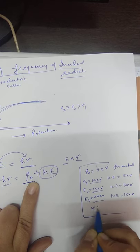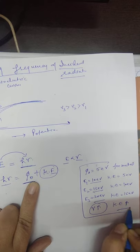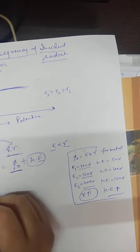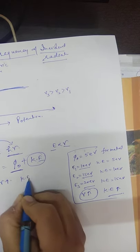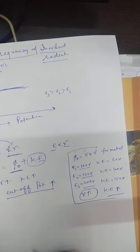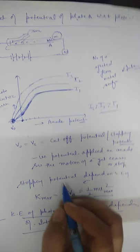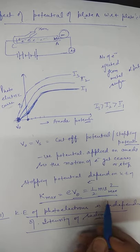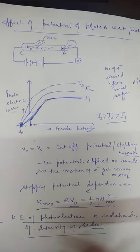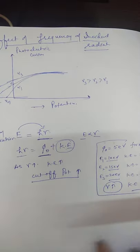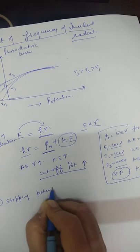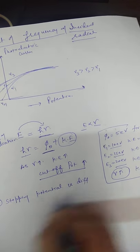So as frequency increases, kinetic energy increases and cut-off potential also increases. Because the maximum kinetic energy equals eV₀ = ½mv²_max. As frequency increases, cut-off potential increases. To conclude: stopping potential or cut-off potential is different for different frequencies.